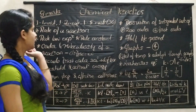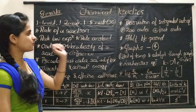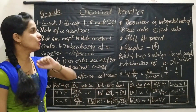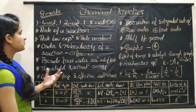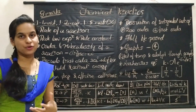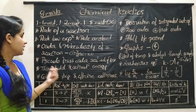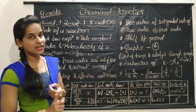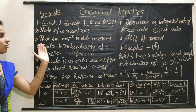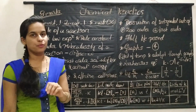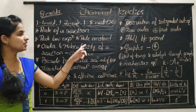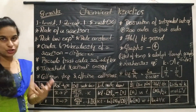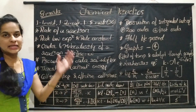Let us move on to important topics. Rate of a reaction, rate law expression, and rate constant — these are some basic terms or basic topics for Chemical Kinetics. Please study all these concepts: what is the rate of a reaction, what is the rate law expression, etc. Then, one important topic is order and molecularity of a reaction — calculation of order and molecularity and the difference between order and molecularity. Both are very, very important. I have already uploaded some videos about these topics.